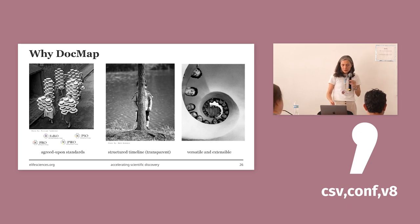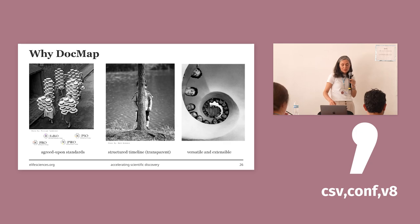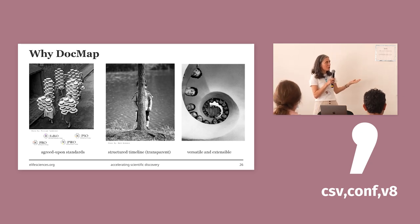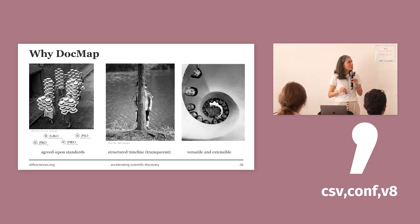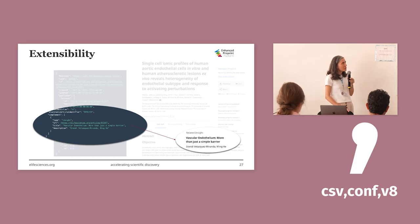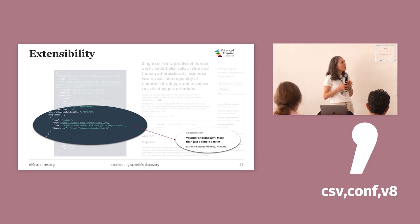DocMap is also versatile and extensible — more than just a guideline. Its standards and taxonomy make it adaptable for different groups with diverse needs. I only showed the Enhanced Preprint Platform in the use cases, but we have other users as well. I will mention them shortly, but I want to show this extensibility first. Just a couple of weeks ago, we added related content into DocMap — related podcasts, related articles or collections — to make it visible on our website. So we added that part into DocMap and now it is visible and accessible for everyone.